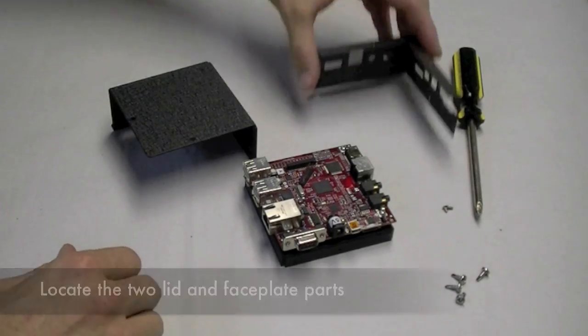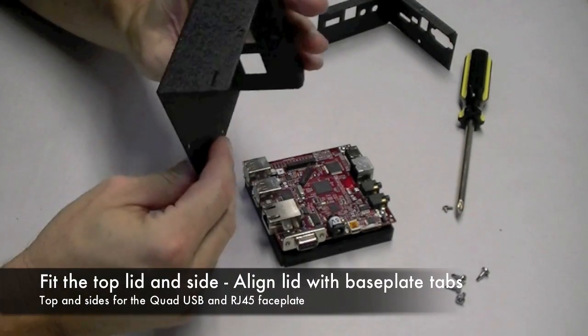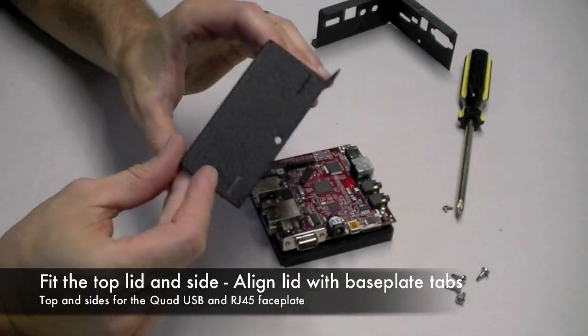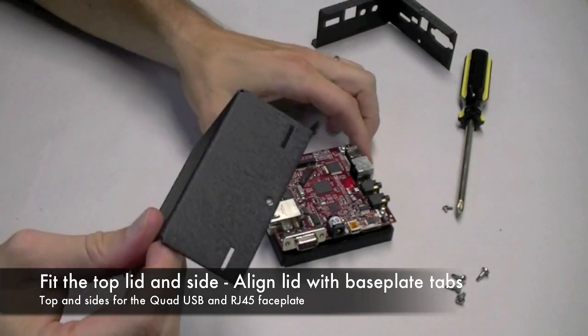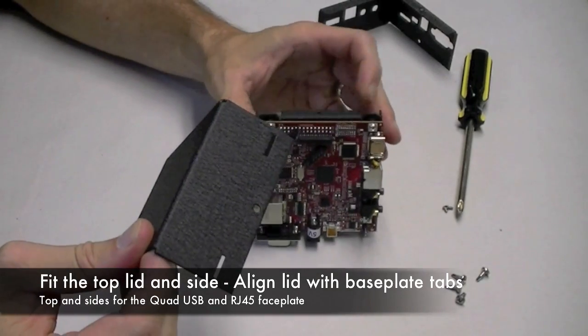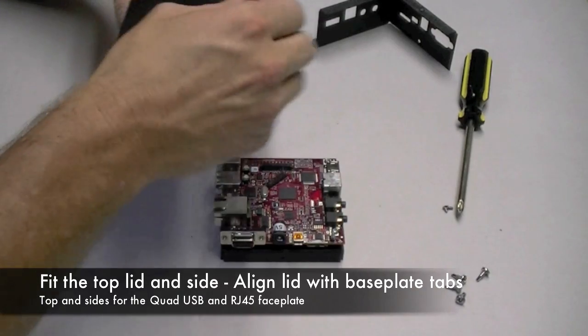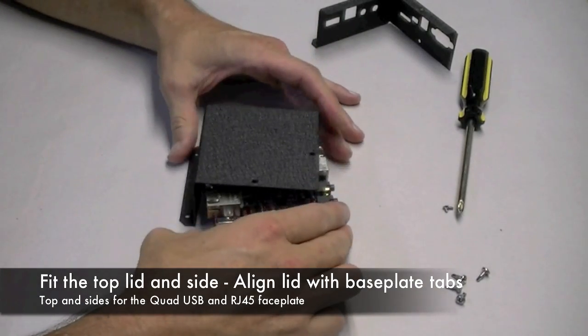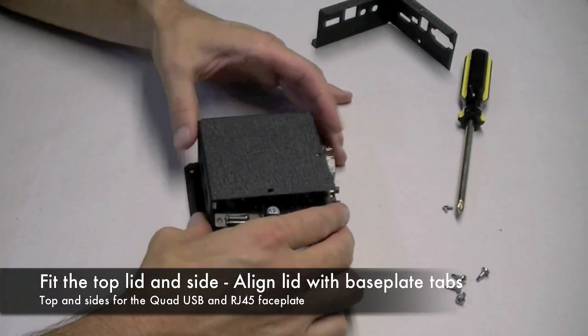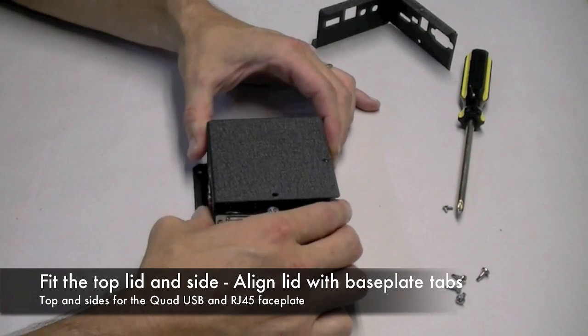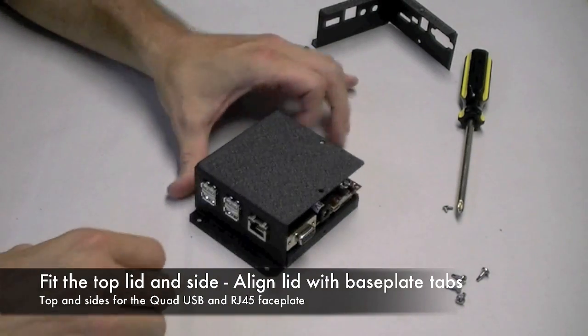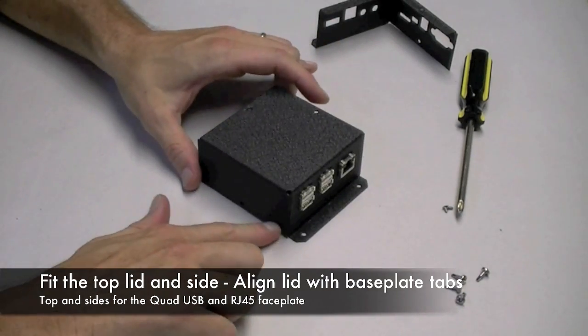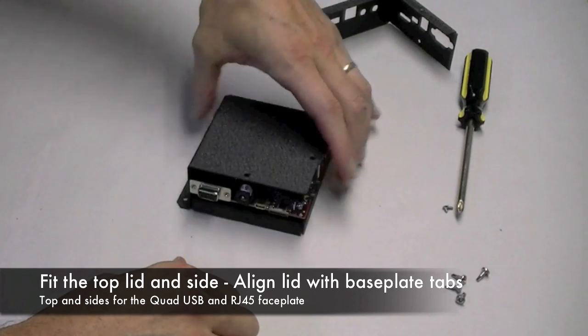Next, locate the two lid pieces. There's a wrapper and an overall lid. Find the lid with the two tab slots that are cut out in it. Those are going to line up with the two tabs that we showed you earlier. Slide the BeagleBoard into the top and it'll snap in so that those tabs line up with the lid.